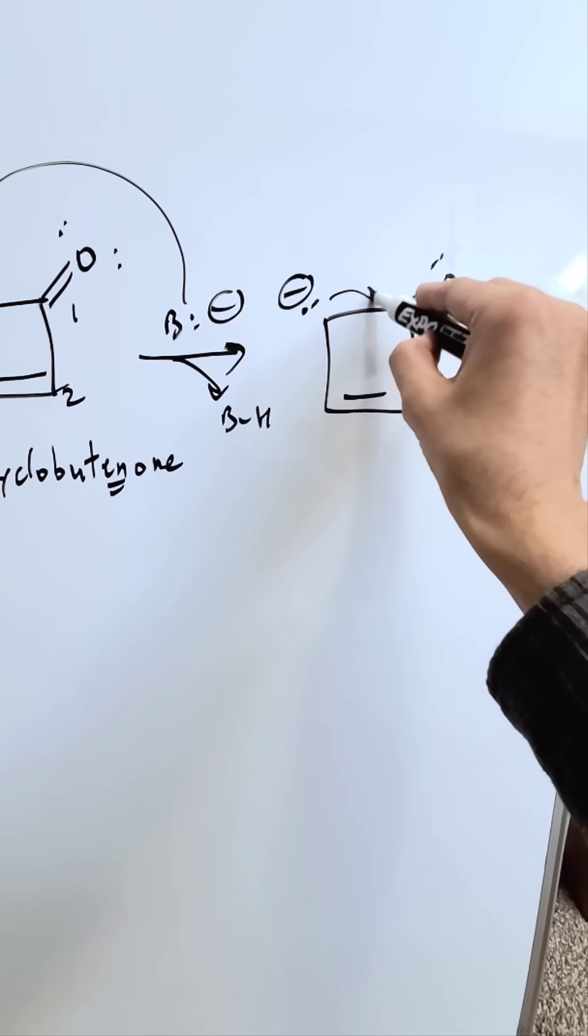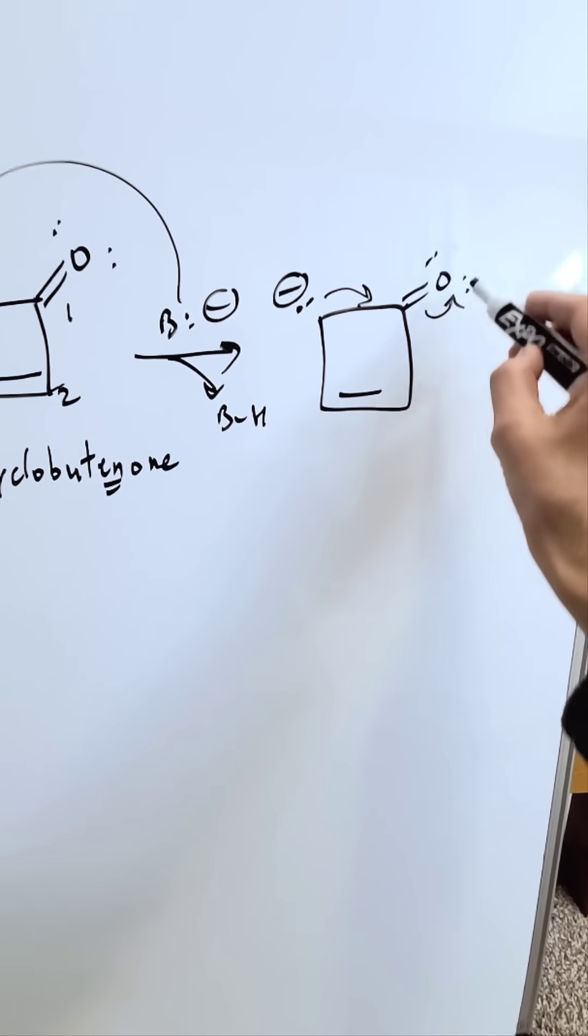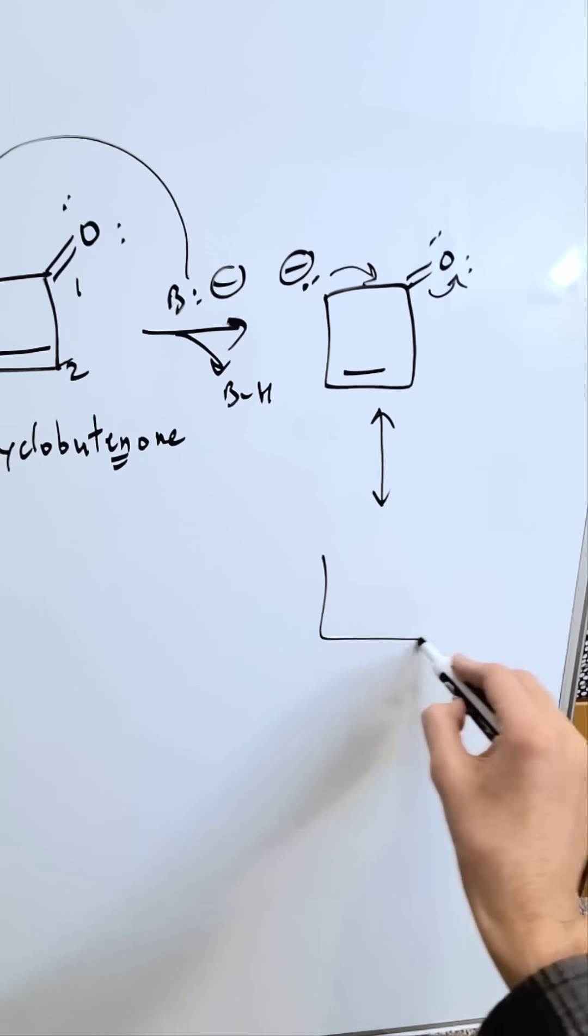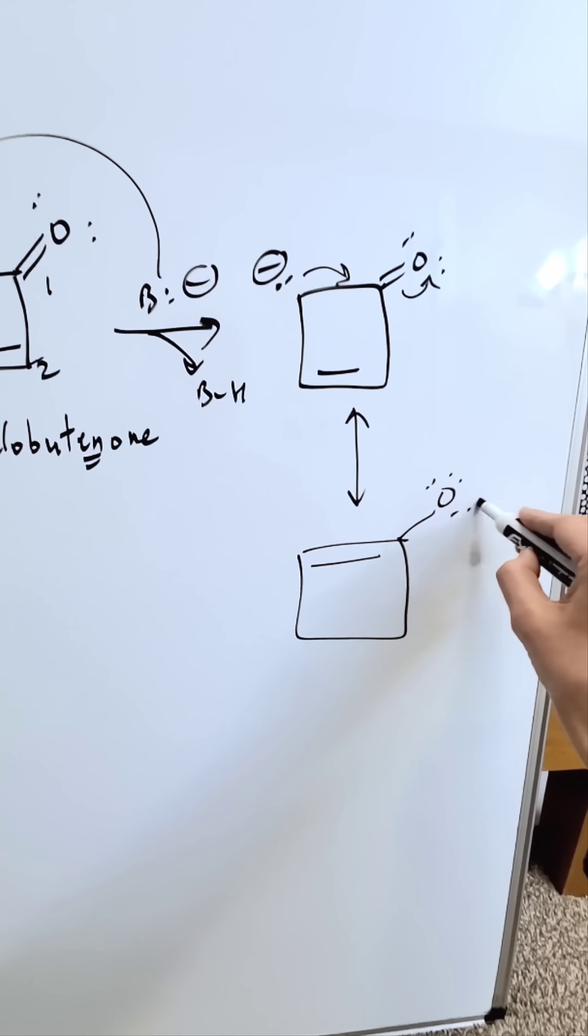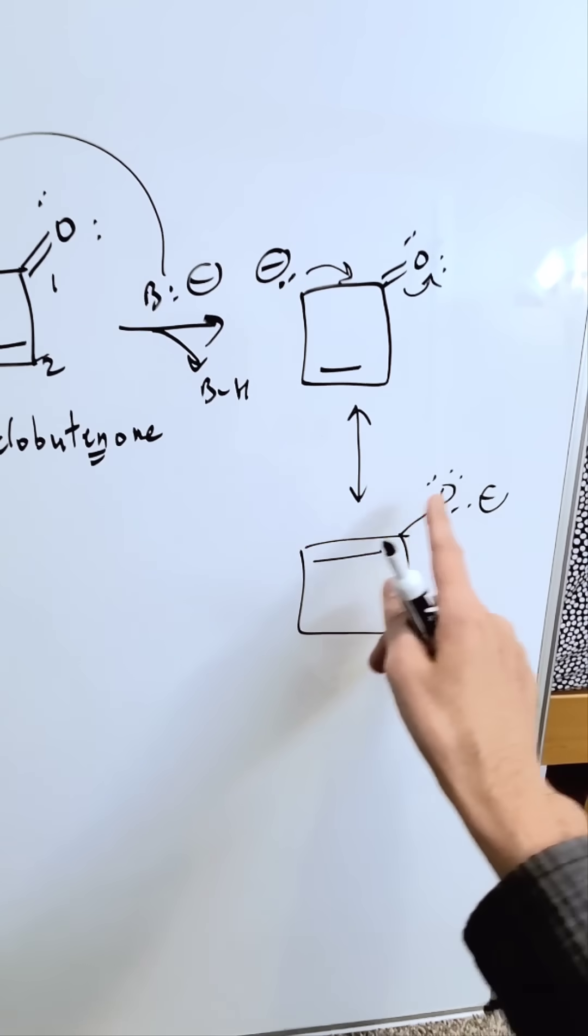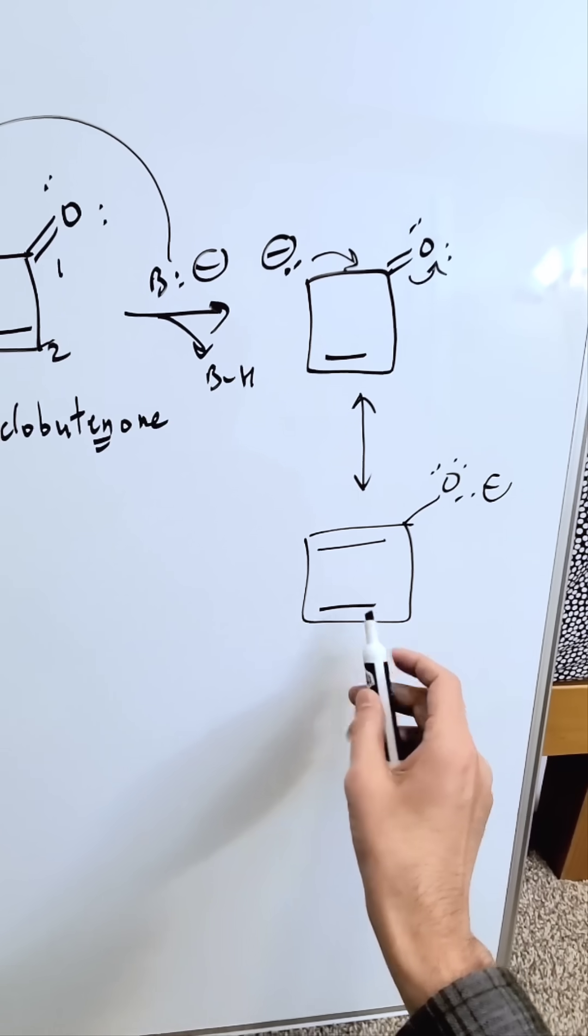Now what you can do is involve a resonance here with the carbonyl functionality, and in this particular case, you'll develop an alkene over here and the oxygen will become negatively charged. You've transferred the negative from here to here. This alkene stays as is.